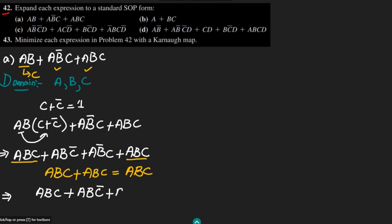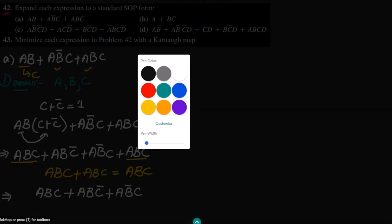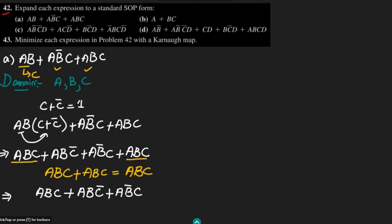So writing them in a single form, we get: abc + abc' + ab'c. This is the standard SOP form of the expression, and this is the answer for part A.